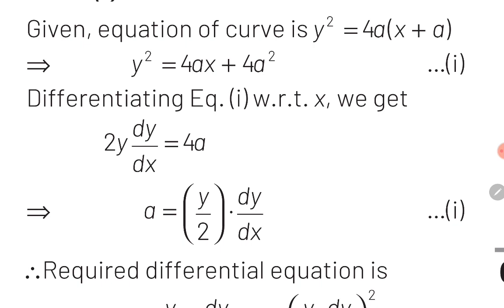The given equation of the system of parabolas is y² = 4a(x + a). Opening the bracket on the right hand side, the equation becomes y² = 4ax + 4a². Now we will take the derivative on both sides. The derivative of y² will become 2y·(dy/dx) on the left hand side, and on the right hand side, derivative of 4ax will become 4a. The derivative of the constant term 4a² will be equal to 0. Through this, we will obtain the value of a: a = y/2·(dy/dx).